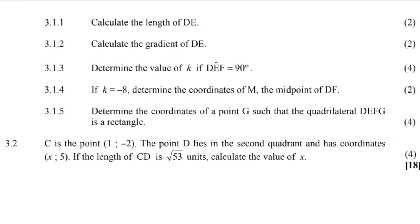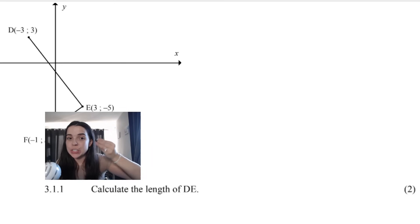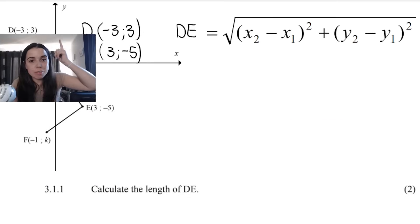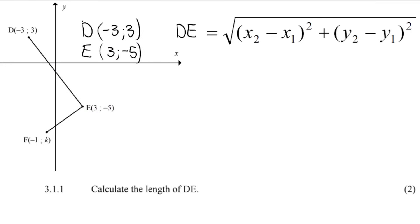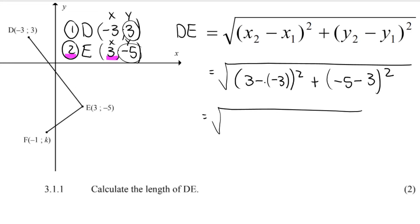Let's jump right in to the questions, starting off with: calculate the length of DE. In order to calculate the length of a line DE, we're going to use the distance formula. I've written out the distance formula and rewritten my coordinates so they are nice and big. I'm going to call this coordinate number 1 and this one number 2. So the distance formula gives me the square root of (X2 − X1)² + (Y2 − Y1)², which is √((3 − (−3))² + (−5 − 3)²) = √(6² + (−8)²) = 10. That's my final answer.